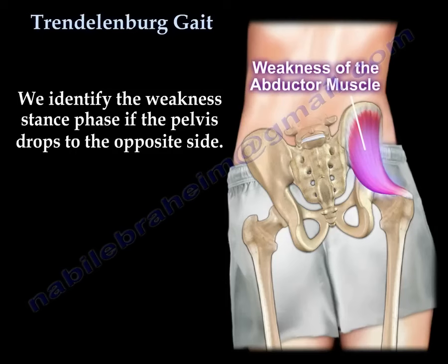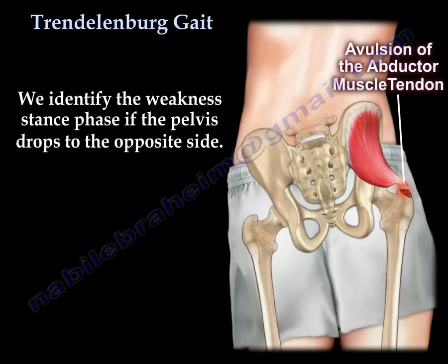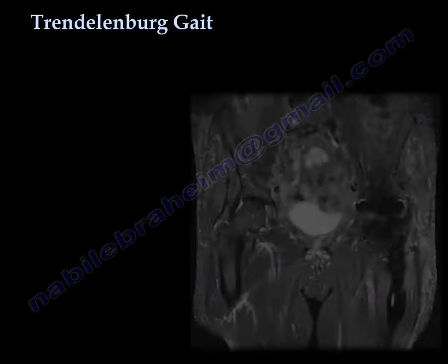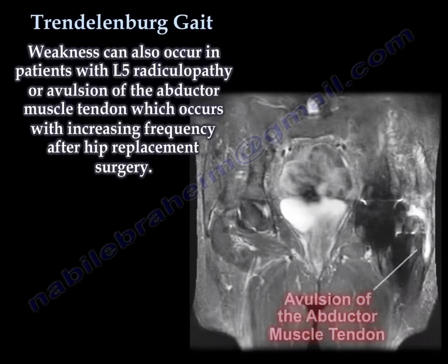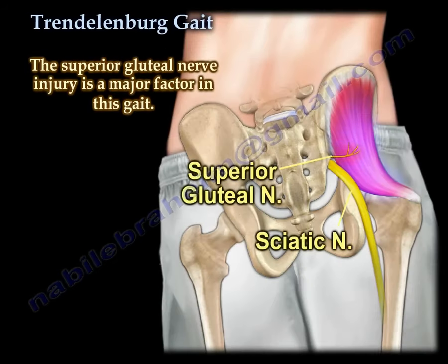We identify weakness during the stance phase if the pelvis drops to the opposite side. Weakness can also occur in patients with L5 radiculopathy, or avulsion of the abductor muscle tendon, which occurs with increasing frequency after hip replacement surgery. The superior gluteal nerve injury is a major factor in this gait.